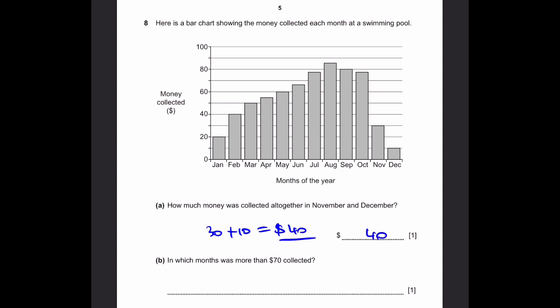Part B. In which months were more than $70 collected? Let's draw the line of $70. It is here. More than $70 is 1, 2, 3, 4 months, which are July, August, September, and October.